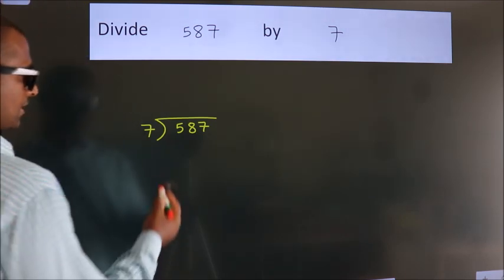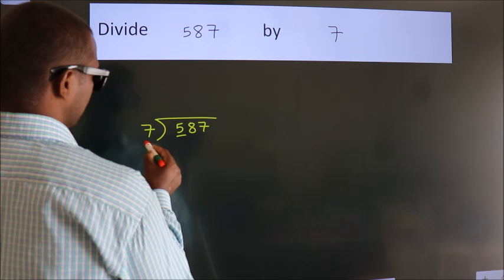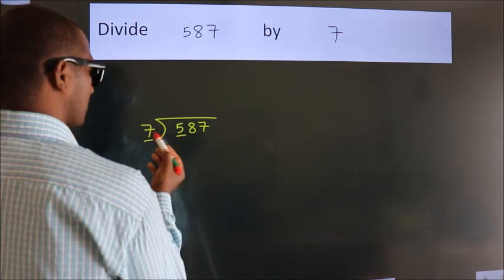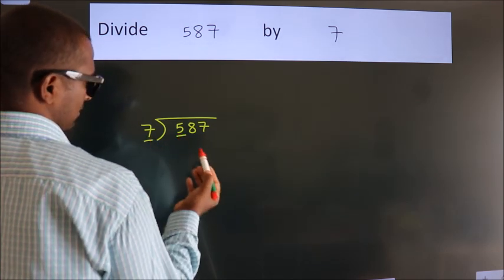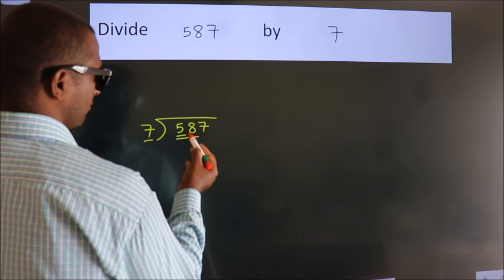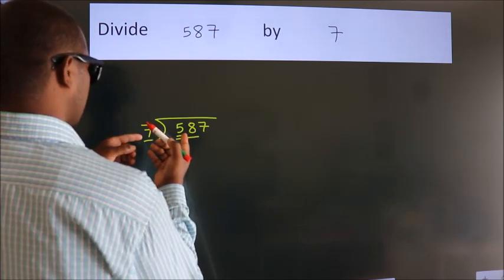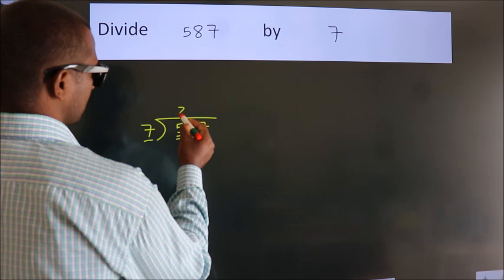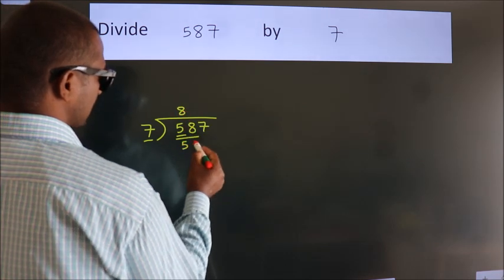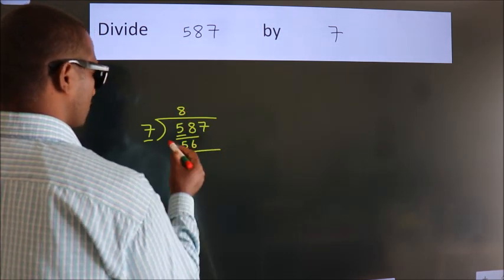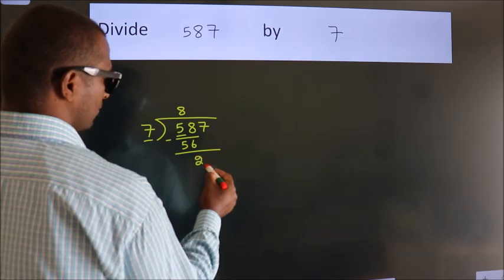Next, here we have 5, here 7. 5 is smaller than 7, so we should take 2 numbers: 58. A number close to 58 in the 7 table is 7 times 8 equals 56. Now we should subtract. We get 2.